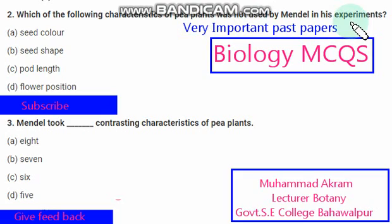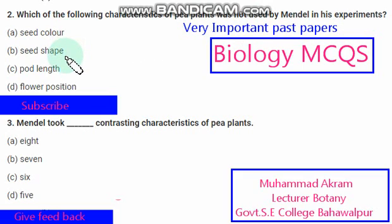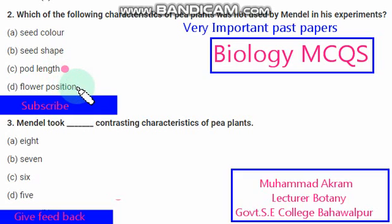Which of the following characteristics of pea plant was not used by Mendel in his experiments? Seed color — it was used. Seed shape — it was also used. Pod length — yes, pod length was not used by Mendel. Flower position axial/terminal — this was also used. So the right option is option C.